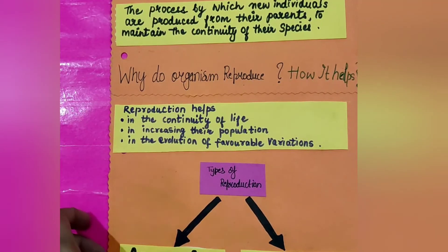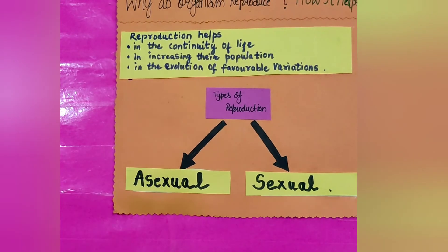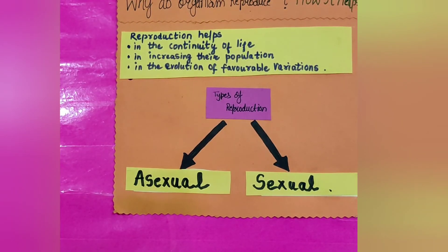What are the two types of reproduction? The two types of reproduction are asexual and sexual reproduction.